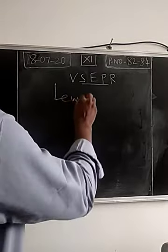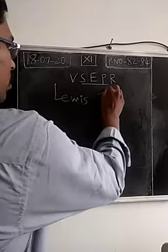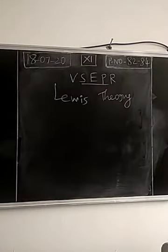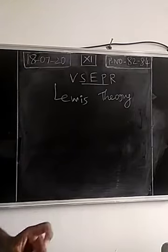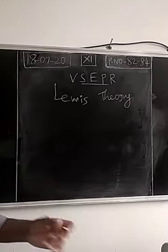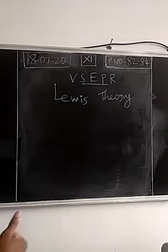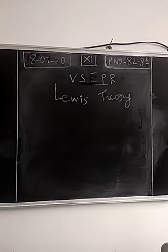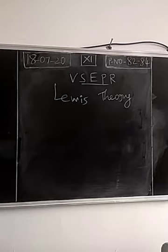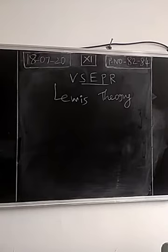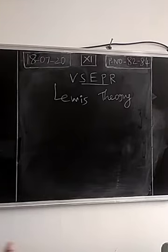Consider the Lewis structure, which is given by Lewis theory. For a covalent molecule, we theoretically draw a structure using symbols as well as valence electrons. Using valence electrons, we draw a Lewis dot structure. Finally, we check whether all the atoms are obeying the octet rule or not. We derive a Lewis dot structure using five steps for a covalent molecule.